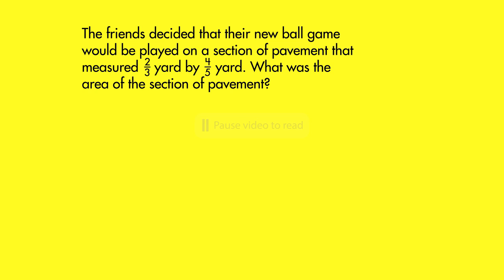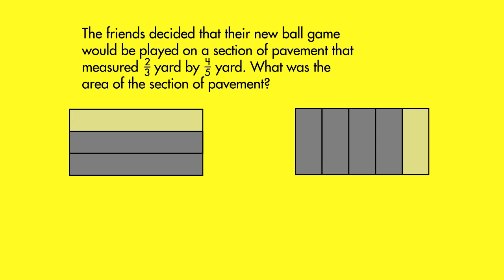Look at this word problem. You can model it by showing two rectangles, one that shows two-thirds of a yard and one that shows four-fifths of a yard. To find the area, multiply.